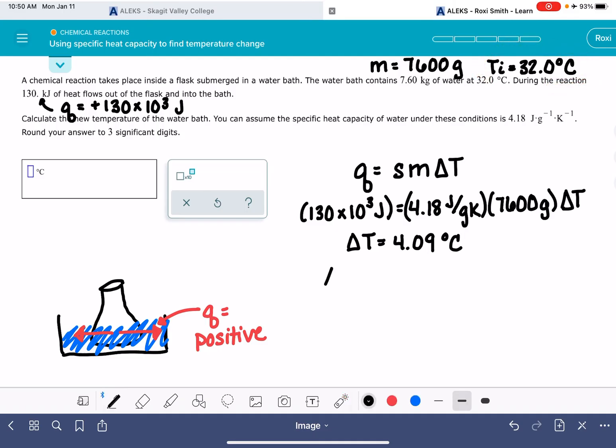Now, delta T, as you know, is the final temperature minus the initial temperature. We know that the initial temperature was 32 degrees. The delta T is 4.09. The final temperature, we don't know. And so now all that we have to do here is just solve for Tf.